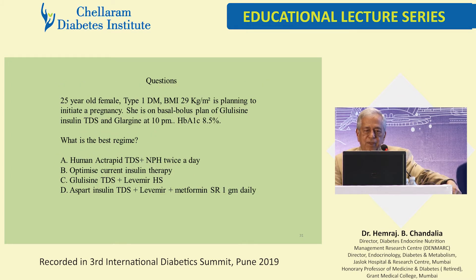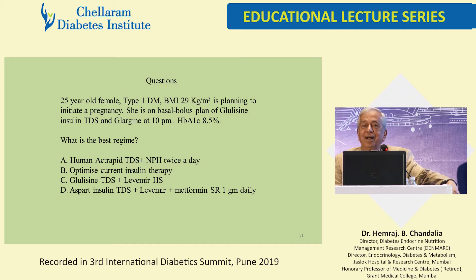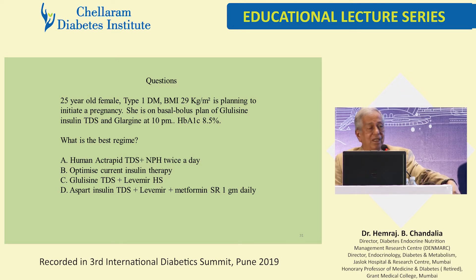Nugget 4: A 25-year-old female, type 1 diabetic, BMI 29, planning pregnancy. Currently on basal-bolus: glulisine three times a day and glargine at 10 PM, A1c 8.5. Options: human regular TID plus NPH twice daily; optimize current therapy only; glulisine TID plus levemir at bedtime; or levemir plus metformin 1 g daily. Answer D — levemir plus metformin — is best. Aspart and levemir are safe in pregnancy. With BMI 29 and the risks of obesity and excess weight gain in pregnancy, metformin as a sensitizer avoids large insulin doses and hypoglycemia. Metformin must be stopped when labor pains start.